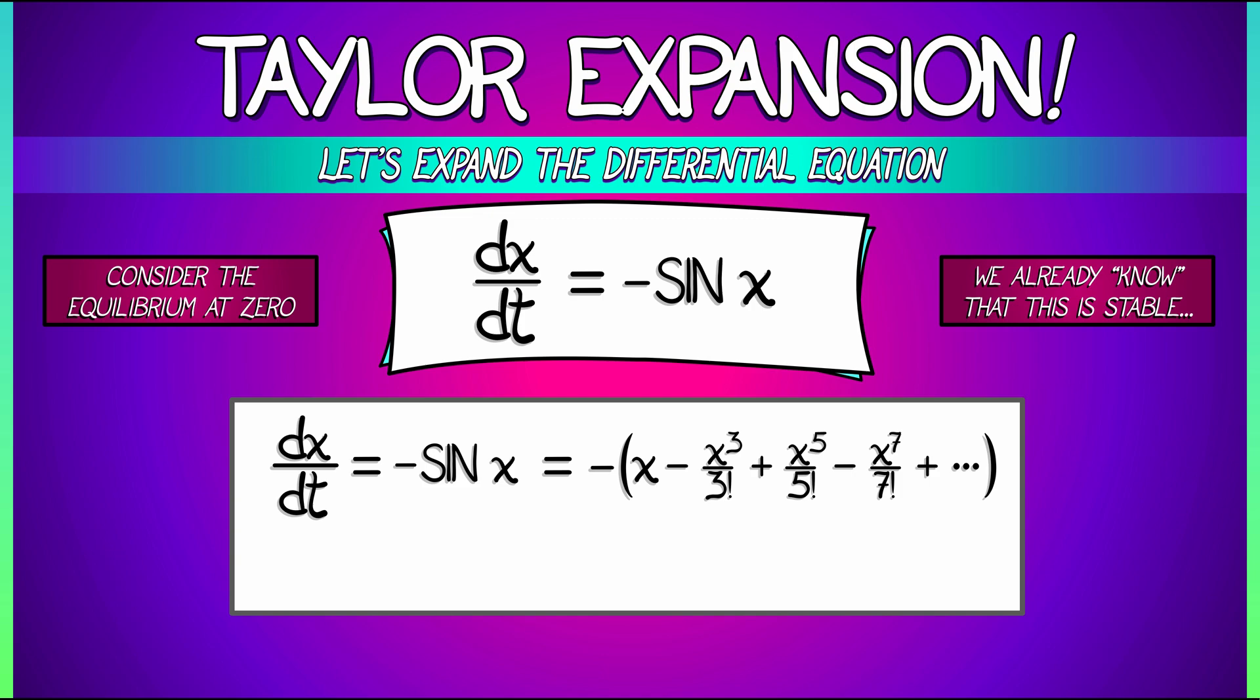What do we know? We know that this is really the same thing as minus x plus big O of x cubed, if I wanted to package up all of those small terms. And because we're looking near the equilibrium where x equals zero, these are small terms.